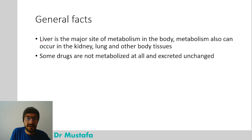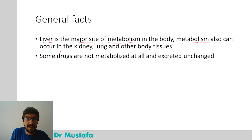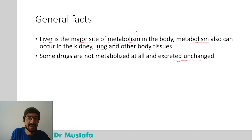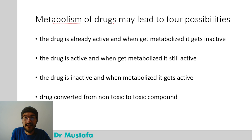The liver is the major site of drug metabolism in the body. Metabolism can also occur in the kidney, lung, and other body tissues. Some drugs are not metabolized at all and are excreted unchanged — some because they are already water-soluble and can be excreted easily without being metabolized. Metabolism of drugs might lead to four possibilities.